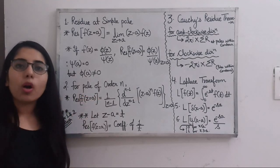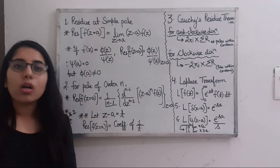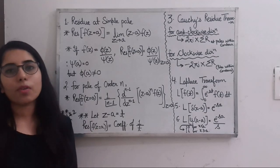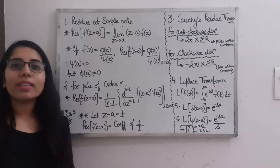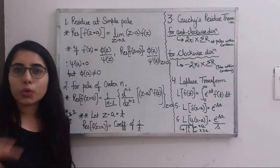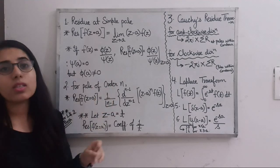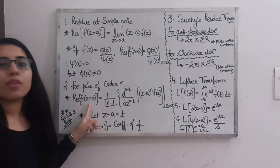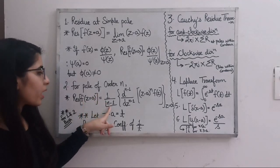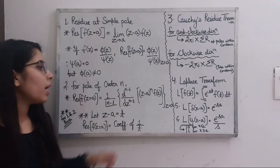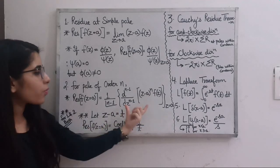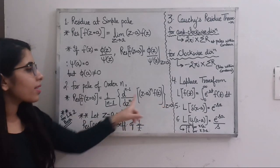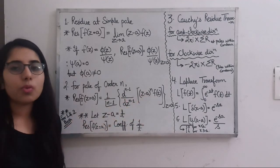Next, for the residue at a pole of order n: if the overall power of the term in the denominator that gives you the pole is greater than 1, say 2, 3, or 4 (an integer), then that is the order of the pole. The formula is: residue at z = a equals (1/(n−1)!) · d^(n−1)/dz^(n−1) [(z − a)^n · f(z)], evaluated at z = a after solving the derivative.